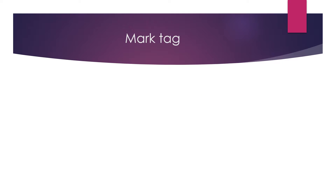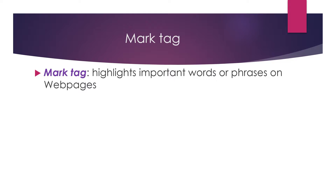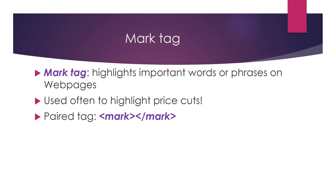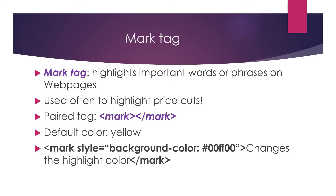The mark tag highlights important words or phrases on the webpage. It is most often used on the internet to highlight price cuts. It is a paired tag, so you have your opening mark tag and your closing mark tag. The default color for your highlight is yellow. If you want the highlight to be a different color, you will use the mark tag followed by the style property, and then the value would be background-color, followed by the color you want your highlight to be.